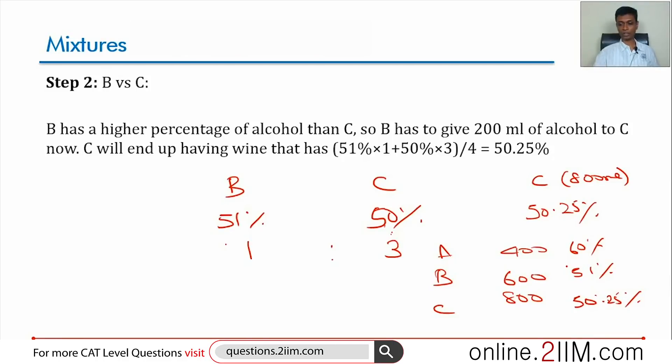Now A and C will meet. A will give 200 ml to C, and then A and B will meet and so on. Obviously this is going to take some time. You've got to snap out of it and then see what is going to happen after here.